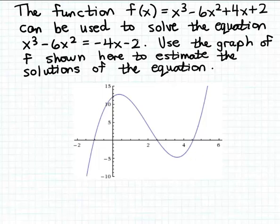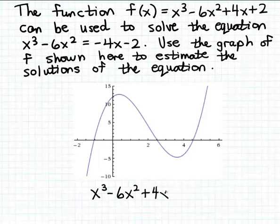The first thing I'm going to do is rewrite this equation so that one side is zero. That's easy to do by adding 4x and 2 to both sides. The right-hand side becomes zero, giving us x cubed minus 6x squared plus 4x plus 2 is equal to zero. This equation is equivalent to the original — both have the same solutions.